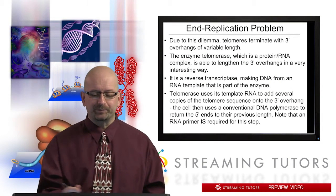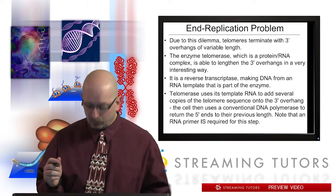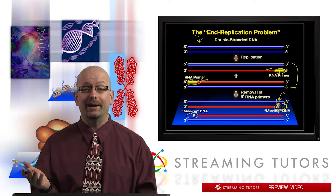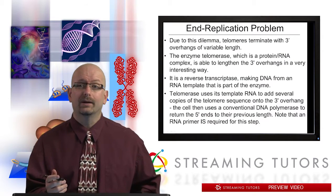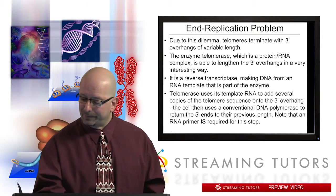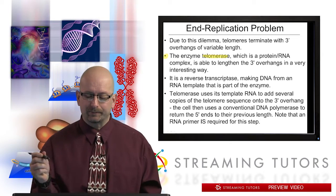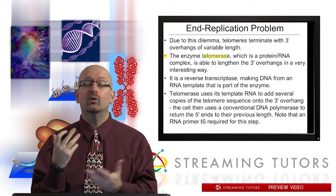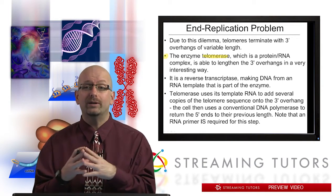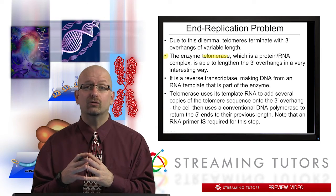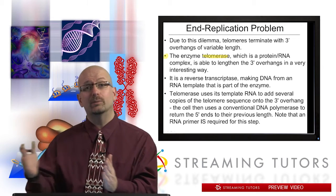So telomeres terminate with three prime overhangs — there's the missing DNA there. The enzyme that can fix this or replenish telomeres is called telomerase. It's an interesting enzyme: the protein is the catalytic part, but it is a protein-RNA complex, and it's able to lengthen the three prime overhangs in a very interesting way that allows the telomere to be replenished.